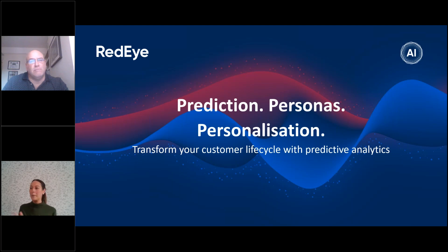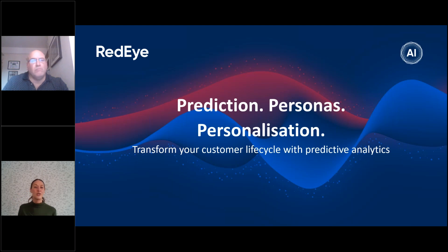So we're going to touch on one particular area of AI today, which is predictive analytics. We're going to cover this in terms of quite simply what it is and how you can use it in your marketing. We'll also look at how it can help you with some of the common challenges you may have around your customer lifecycle — do you have too many single purchases, do you need to grow more VIPs, do you have a really high churn rate? We'll touch on how predictive can help optimise where those customers are along the lifecycle.